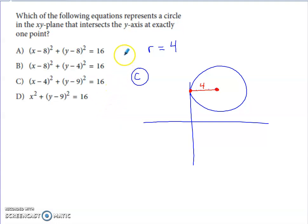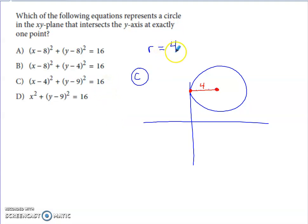Another multiple-choice question: which equation represents a circle in the XY plane that intersects the Y-axis at exactly one point? All answer options have 16 on the right side, so the radius must be 4. I'm looking for which option gives a graph that hits the Y-axis at exactly one point.